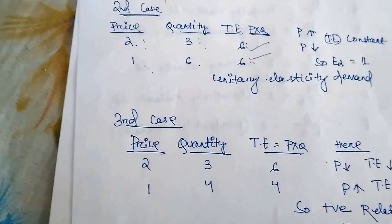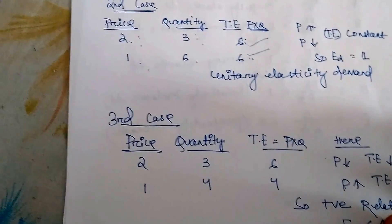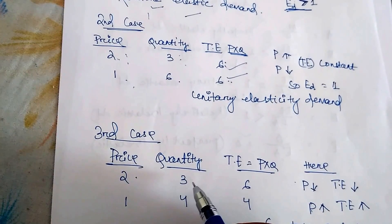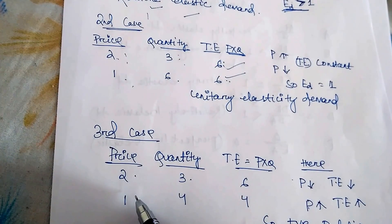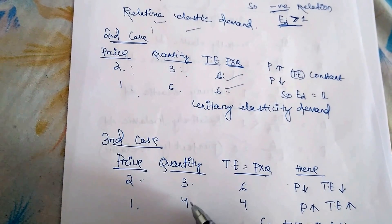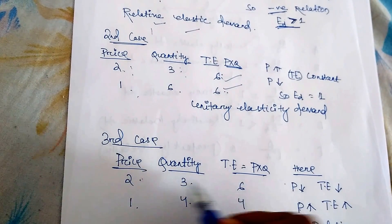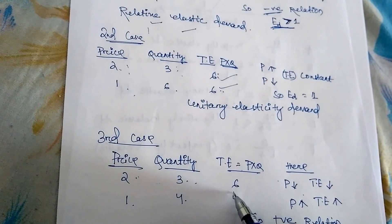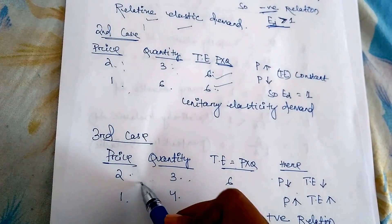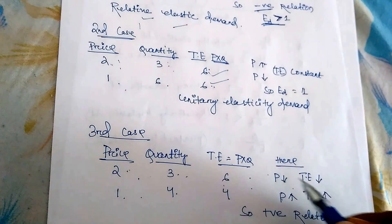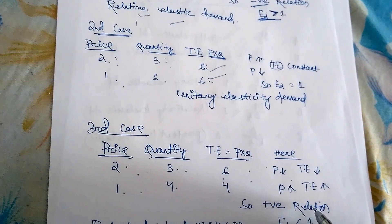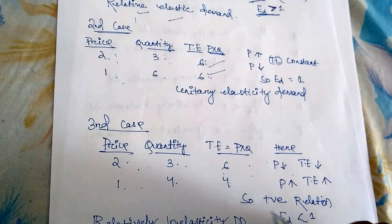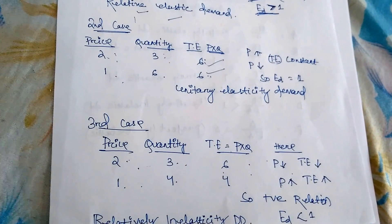Case 3: Price = 2, Quantity = 3 → T = 6; Price falls to 1, Quantity rises to only 4 → T = 4. When price decreases, total expenditure also decreases, and when price increases, total expenditure also increases — a positive relation. So here ED < 1 → relatively inelastic demand.